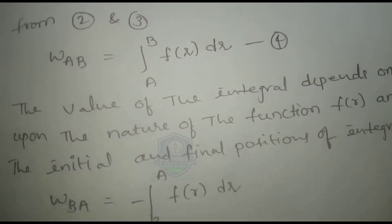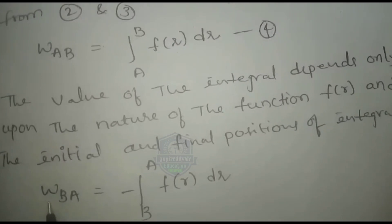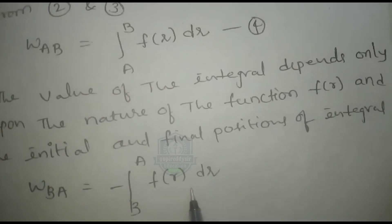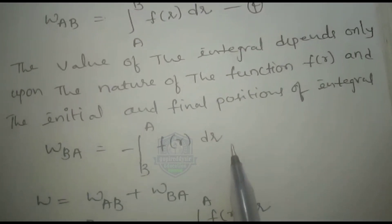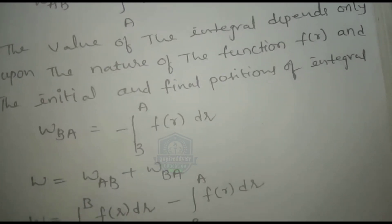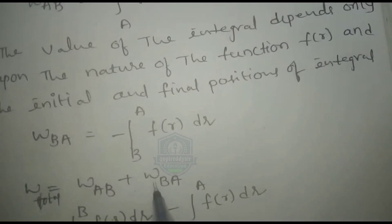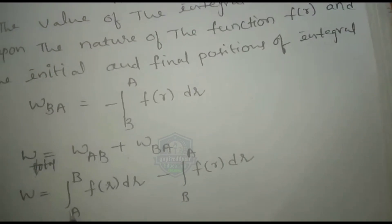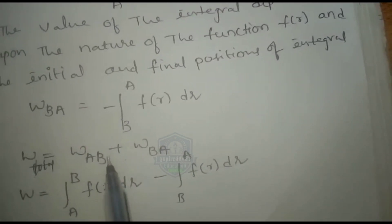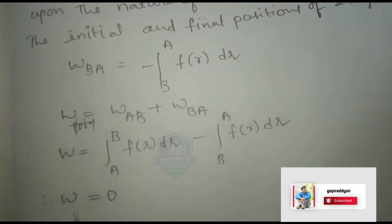For the return path, work done from B to A equals minus the integral from B to A of F of r dr. For the closed path, the total work done equals the integral from A to B of F of r dr minus the integral from B to A of F of r dr, and the total work done is zero.